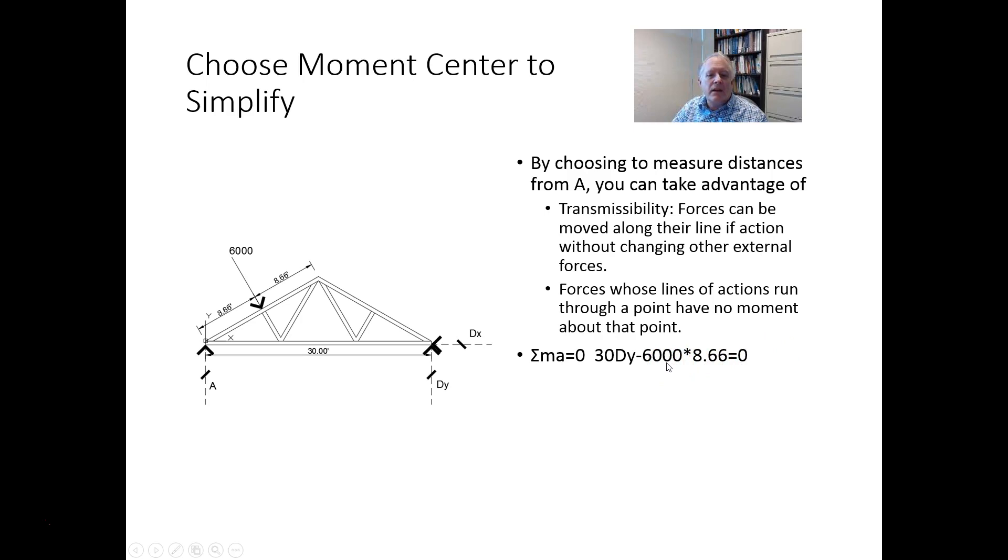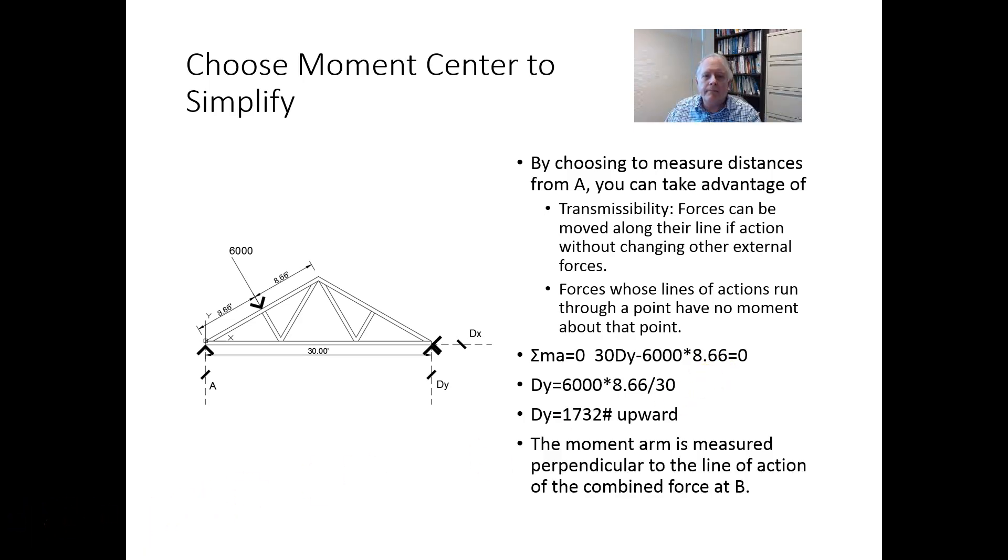So simplifying that gives me the fact that Dy is 1732 pounds upward. So the moment arm is measured perpendicular to the line of action of the combined force at B.